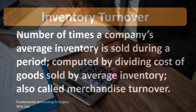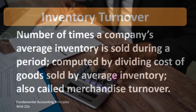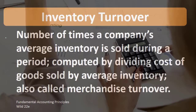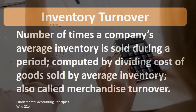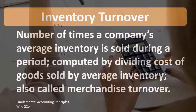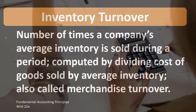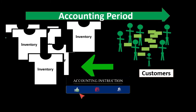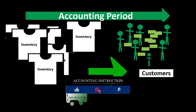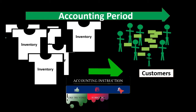What we're trying to determine is a calculation estimating the average inventory that is sold during a particular time period. So if we sell inventories such as t-shirts, we're looking for the average inventory sold to customers for a particular time period.